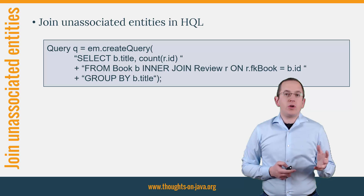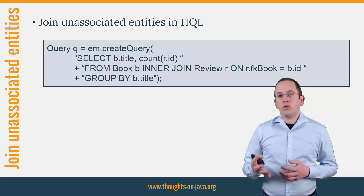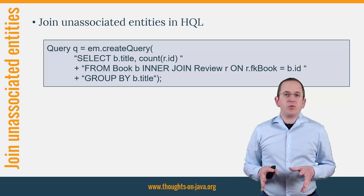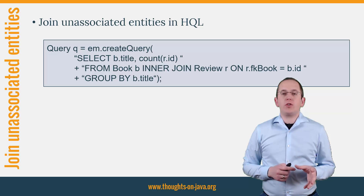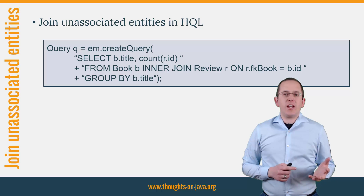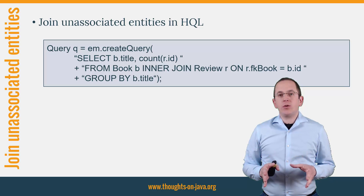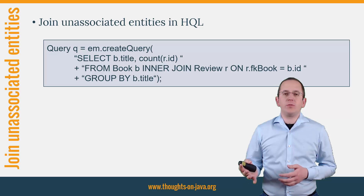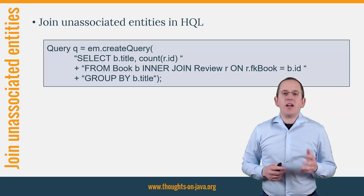So it happens quite often that you could join two tables in a query but you can't do it with JPQL because there's no mapped association for it. In the past, you either had to add the missing association to your domain model or use a cross-join in your JPQL query and hope that the performance wouldn't be too bad. Since Hibernate 5.1, you finally have a third option: you can join entities without a modelled association in HQL. Hibernate uses an SQL-like syntax for it, which makes it easier to use for a lot of developers. Let's jump into the IDE and check the generated SQL statement for this query.